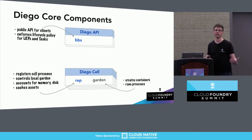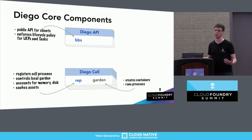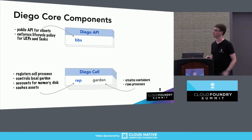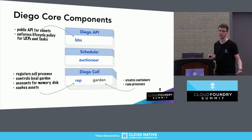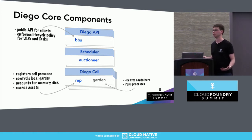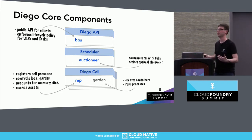The reps themselves are not receiving work directly — that's where the other core components come in. The next instance group is called the Diego API, and that's where the BBS, the main Diego component, lives. It provides the public API to the rest of the Cloud Foundry subsystems so they can submit work and inspect progress. The BBS understands the particular types of work Diego runs — long-running processes, or LRPs, and one-off tasks — and enforces lifecycle rules and state transitions. The BBS delegates placement decisions to the third core service, the auctioneer, which lives on an instance group called the scheduler. The auctioneer receives work from the BBS, communicates with all the cells, and decides optimal placement.